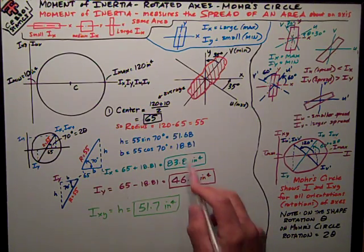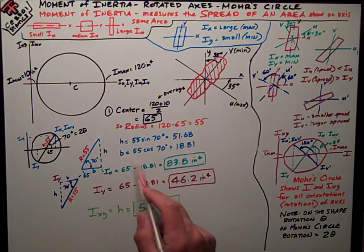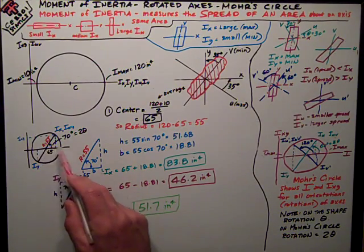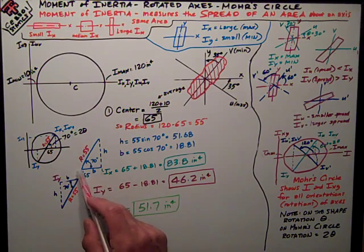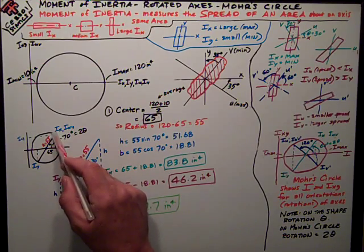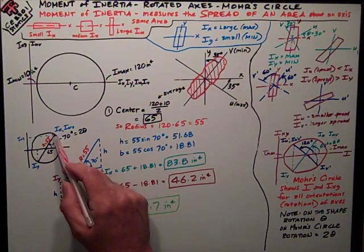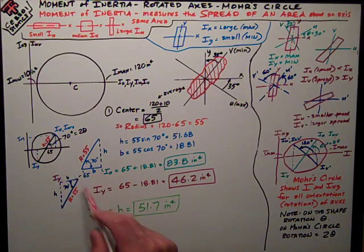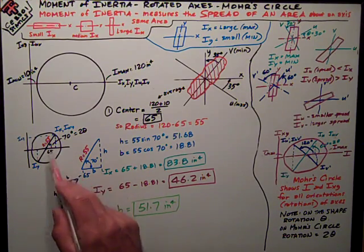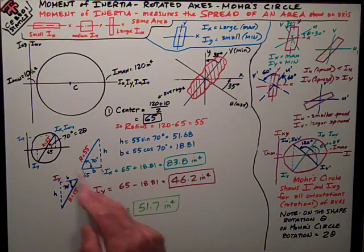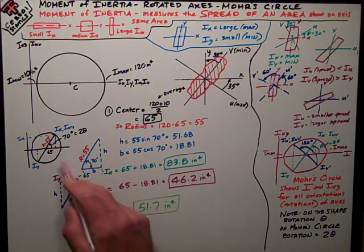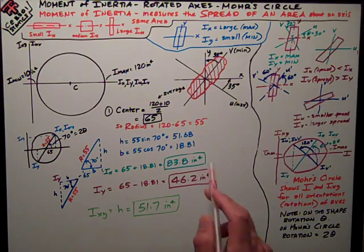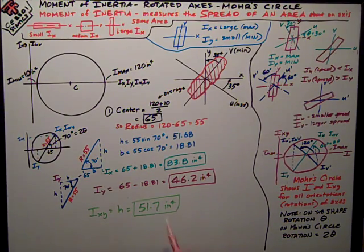Okay, I need to know how to deal with that number. For i-x, what I'm really dealing with is the coordinates along this horizontal axis. So I'm starting at 65. And I want to find the coordinate. If I read down from this point all the way down to this axis, what I'm taking is 65 and I'm adding that b dimension of 18.81 to it. And that gives me i-x. 65 plus 18.81 is 83.8 inches to the fourth. So that's the second answer.